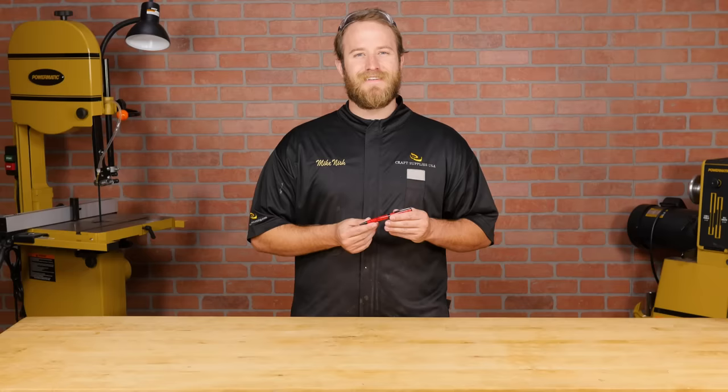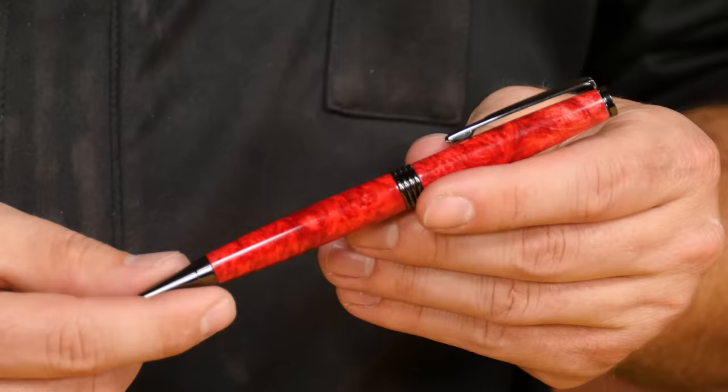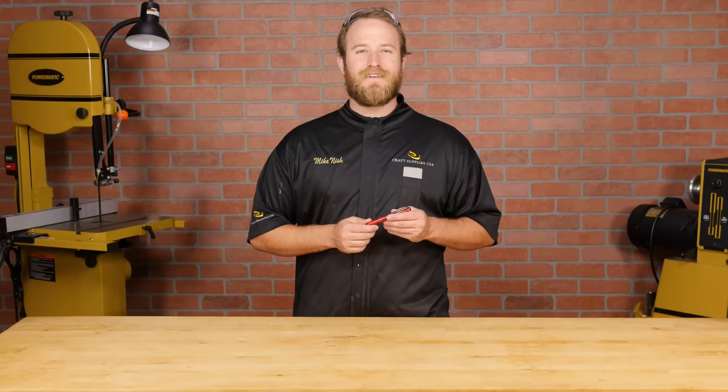Once the parts are all pressed in, align the grain with a simple twist and you're done. Your Roadster Pen is now finished and ready to show off to your friends and family.